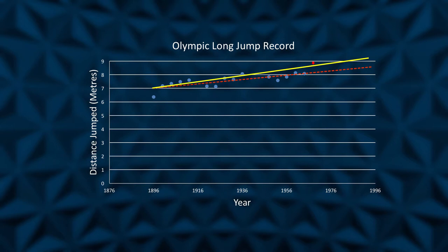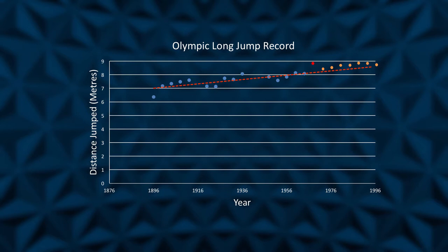But was this jump simply an anomaly? In 1968, many Olympic records were broken in Mexico City as a result of its thin atmosphere due to its high altitude. Interestingly, if we add the data for the next seven Olympic Games, we can see that the original line of best fit prediction, or model, was very close. Beamon's world record was bettered by Mike Powell in 1991, but his Olympic record still stands to this day.